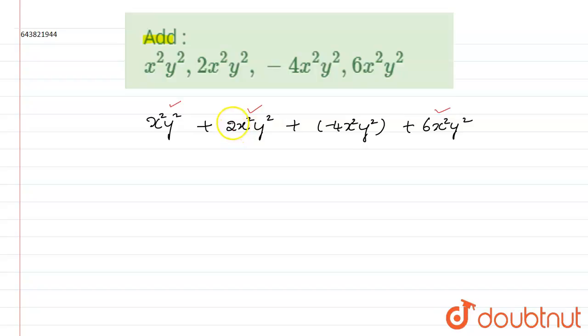6 plus 2, 8, 8 plus 1, 9x square y square plus into minus is minus 4x square y square. Now let us subtract from 9, 4x square y square. So 9 minus 4 is 5, x square y square is the required answer.